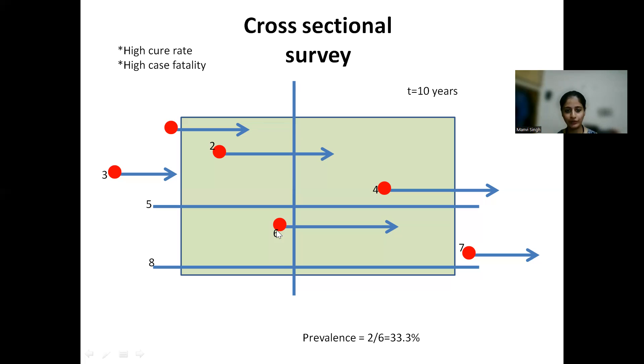This slide is borrowed from my previous session in which the rectangle represents the time frame. The disease here is cancer. The red dot represents onset of the disease, the arrowhead represents mortality. In a cross-sectional survey, at one single point of time, we see the status of the population. Number of people affected divided by the total population gives us the prevalence. So here it is two by six. That is exactly what a cross-sectional survey aims to do.